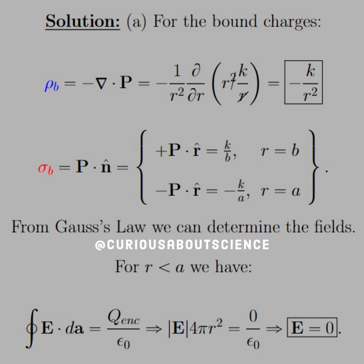The surface bound charge is a little different depending on where your surface is. For R equal B, we see that we are positive because the dipole points from A to B, but if we're at R equal A, then we are negative because it's in the inverse direction.